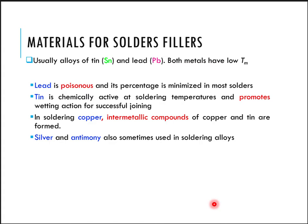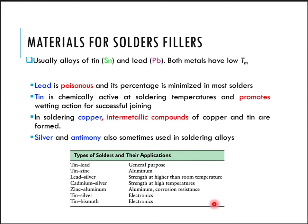The general filler materials used for soldering include tin and lead, which are very common. However, due to the poisonous and toxic nature of lead and its adverse effect on the environment, we are now shifting more towards lead-free solders. For greater strength, the field is moving to other solder alloys such as tin-zinc, lead-silver, cadmium-silver, or zinc-aluminum alloys, each with their own material preferences and applications.